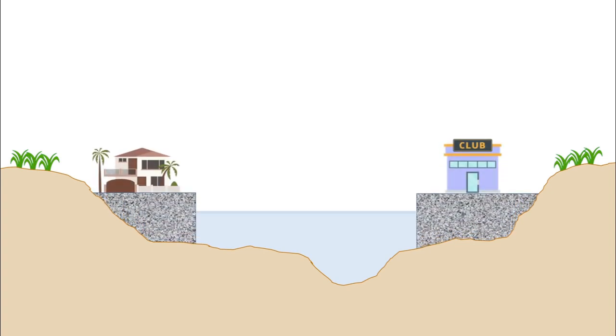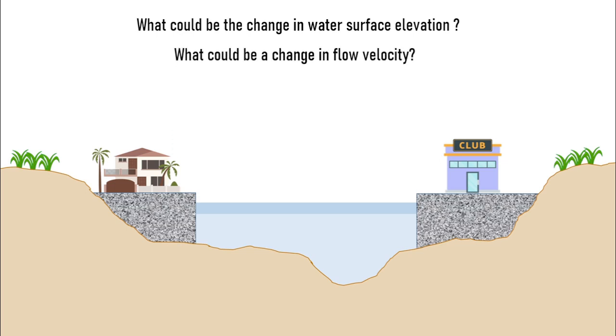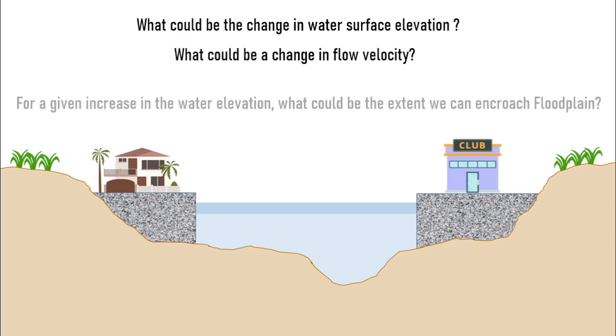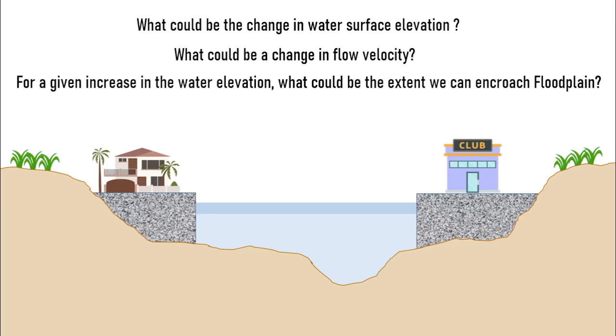Now what will happen if we obstruct this floodplain? It will lead to an increase in flood levels. As engineers, we are interested in various hydraulic parameters with the most common ones being: What would be the change in water surface elevation? What would be the change in flow velocity? From a planning perspective, we need to explore how much of the floodplain can be encroached upon for a given rise in water elevation. This is the central topic of our discussion.